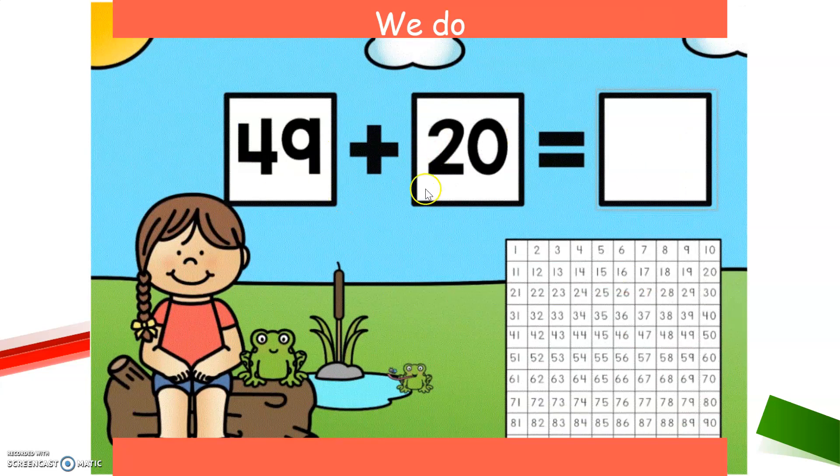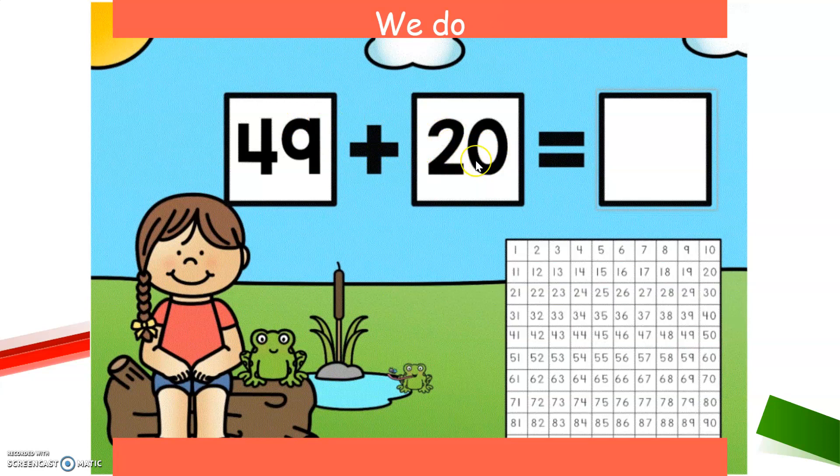Let's do this one. 49 plus 20. Now, which number am I going to start with? Should I start with 20 because it's smaller? No, because it only has zero ones. So it will be easier if I do that one with the jumps. So I'm going to start with 49 because 49 has nine ones. So look for 49 in the number chart. Point it to me. Good job.